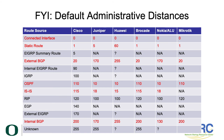IS-IS also follows the same pattern where Cisco and Brocade use the same value, whereas Juniper and Nokia use 18, with Huawei using 15. For IBGP routes, Cisco, Brocade, and Microtech use 200, Juniper uses 170, and Huawei uses 255. Remember that these values are used in determining the best routes utilized in the Global Routing Information Base, otherwise known as the routing table.